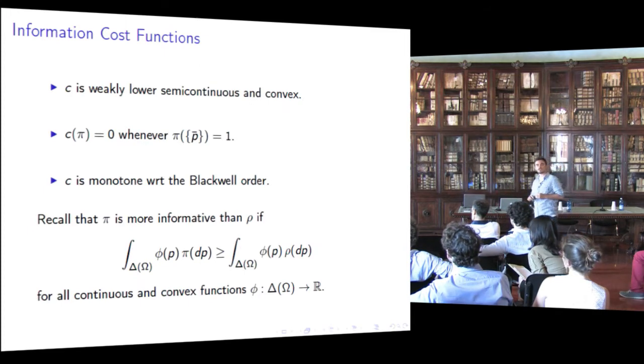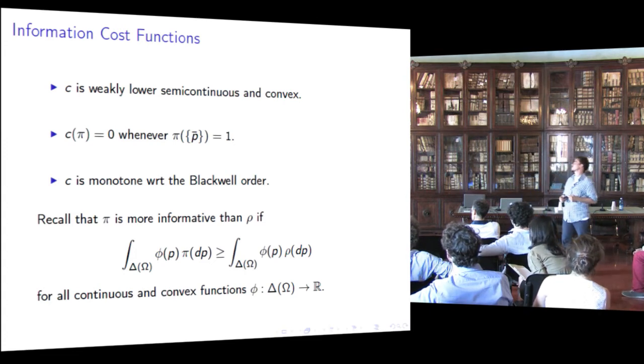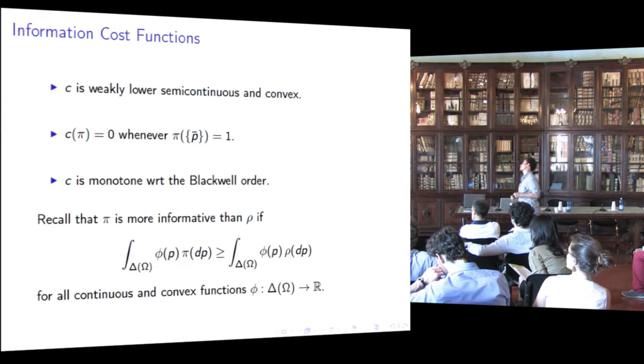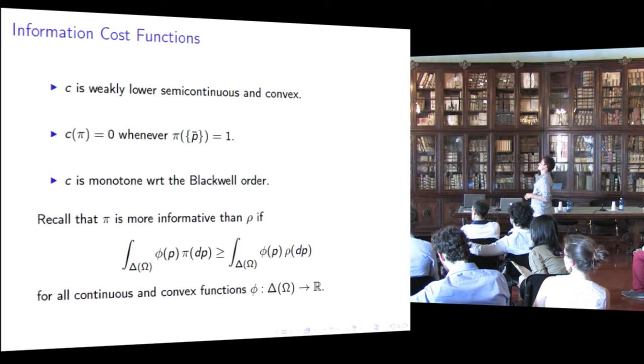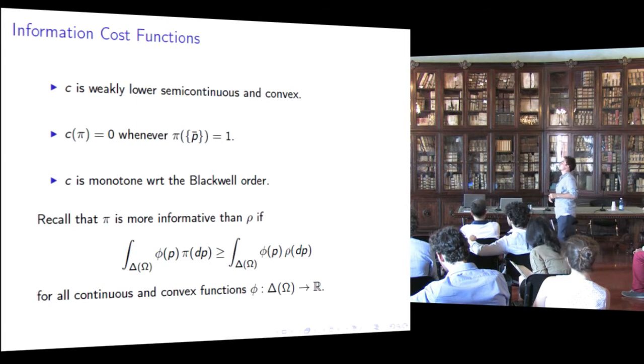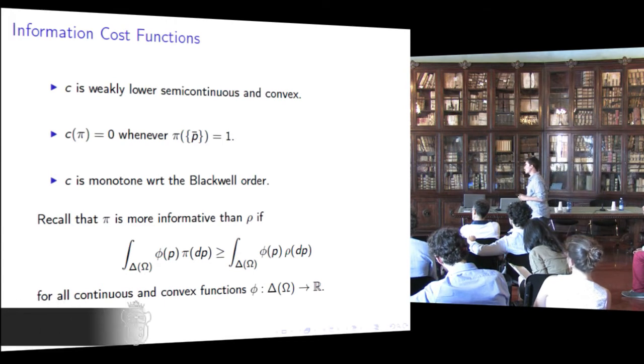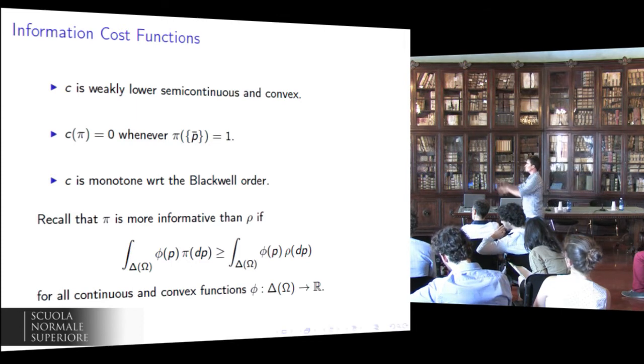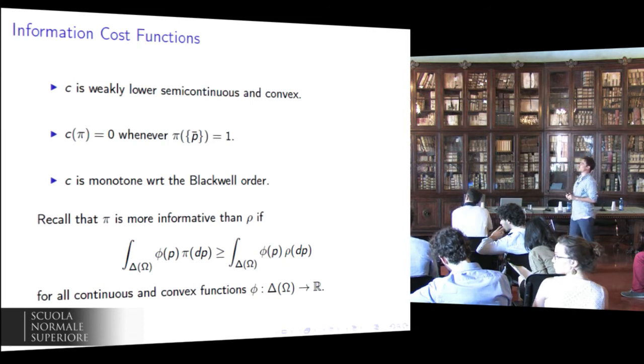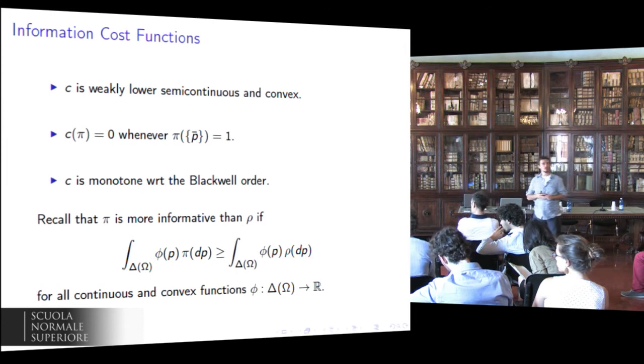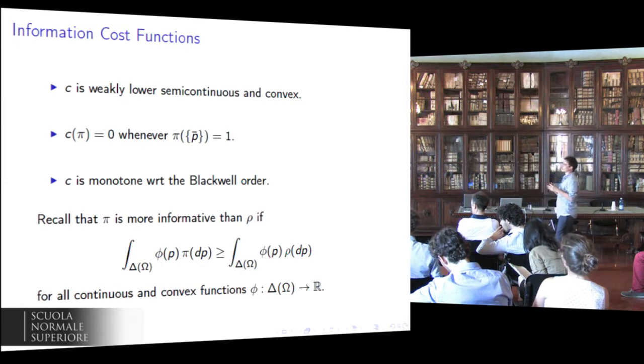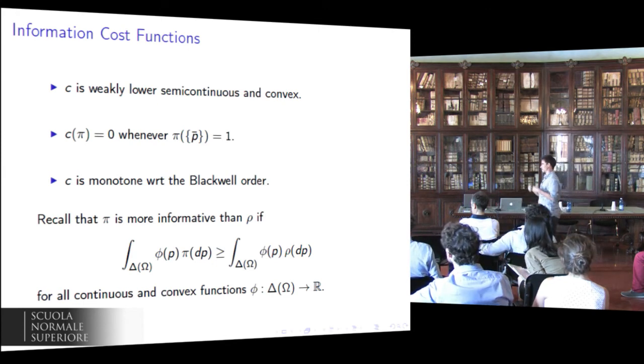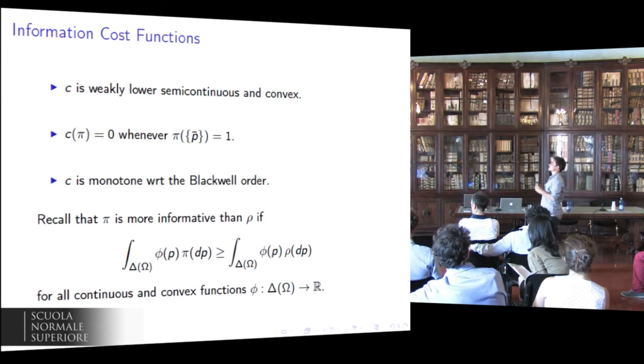Many specifications of the information cost functions have been used in the applied literature on rational attention, and most of them are based on the Shannon entropy. More importantly for our paper, almost all of them share the following properties. C is weakly lower semi-continuous and convex. Then, consider a channel which is concentrated on the prior, that is, a channel that conveys no new information about the state of the world. Then it is assumed that this channel is costless.